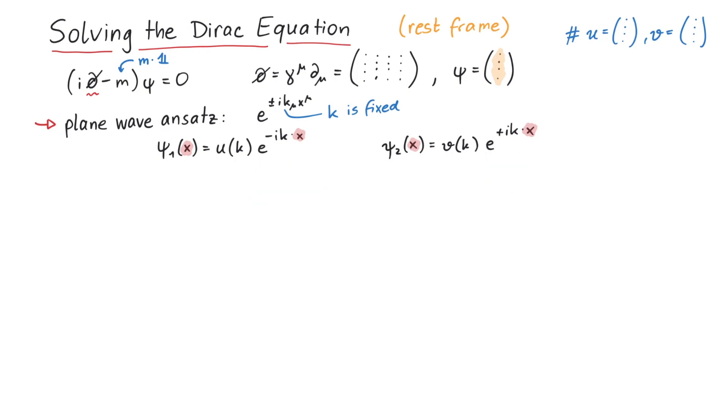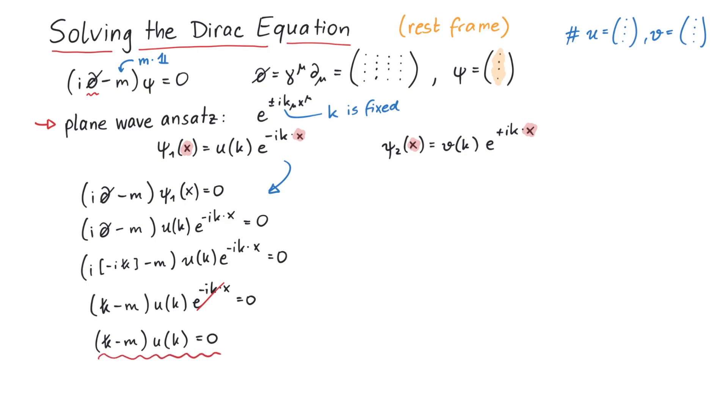Moving on, we now use this plane wave ansatz in the Dirac equation. For psi 1, we get k slash minus m times u is 0. And for psi 2, we get k slash plus m times v is 0. By the way, you can also use such a plane wave ansatz for the adjoint Dirac equation, which leads to those two equations. Now that we have equations for u and v, we would like to know what's inside the four components of u and v.